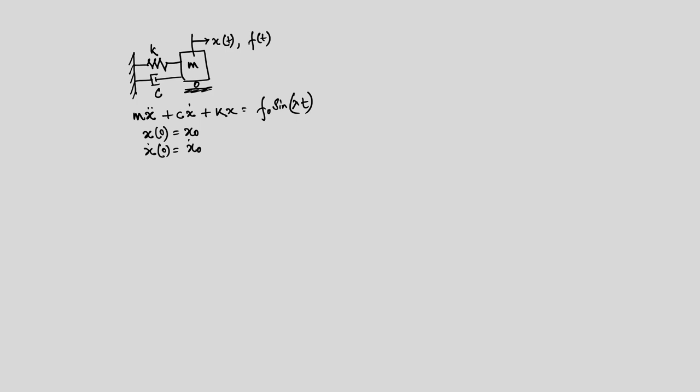For this problem we have already solved the complete solution, which has two components: the complementary function and the particular integral. In the complementary function we have the response due to initial conditions, which we also call the transient response. Because of damping, the transient response dies out as time progresses, so we will only have the particular integral — which we call the steady-state response — after the transient is close to zero.